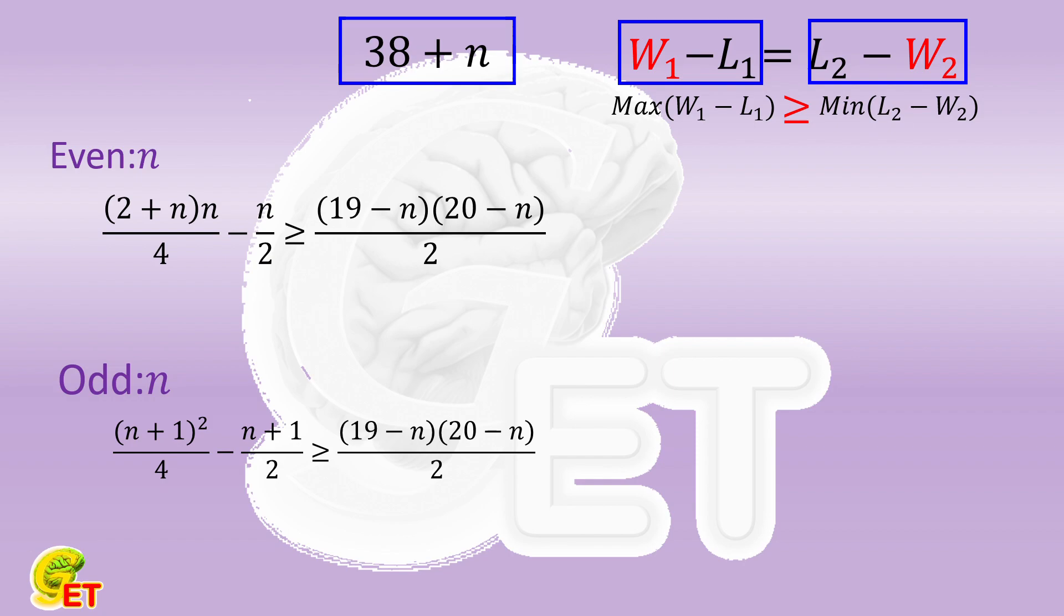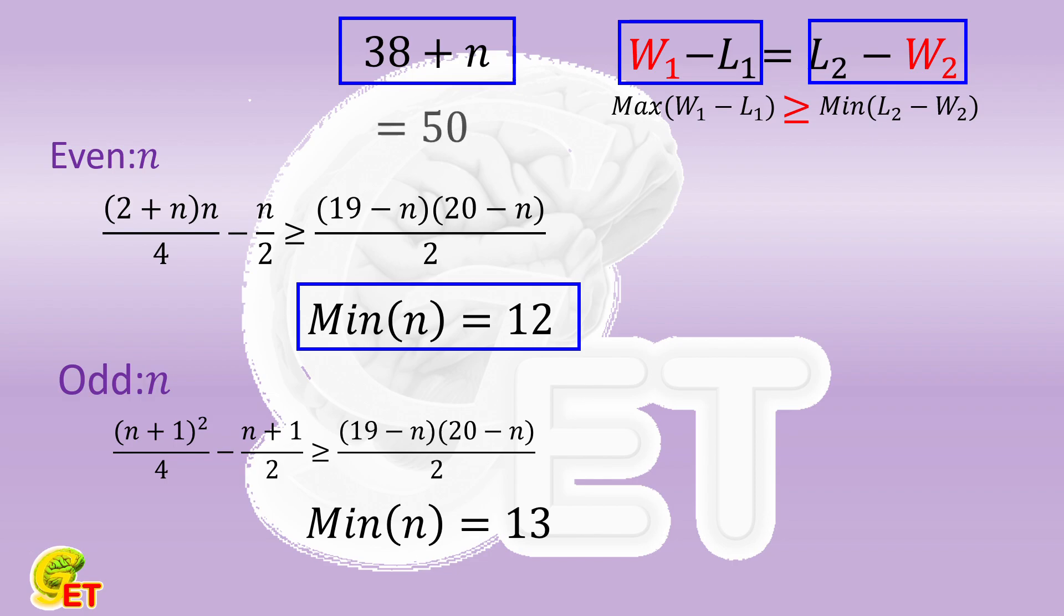When n is even, the smallest even solution is 12. When n is odd, the smallest odd solution is 13. So the final solution is that n equals 12. Then the minimum points for the championship team is 38 plus 12, which equals 50 points.